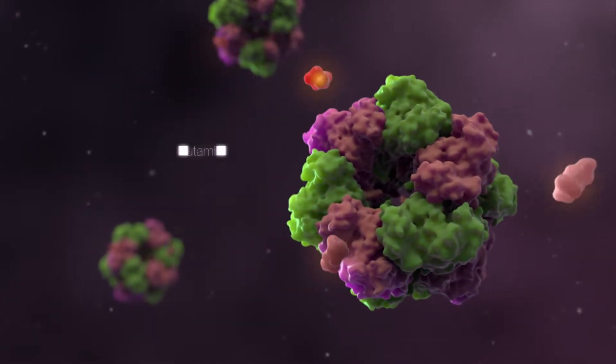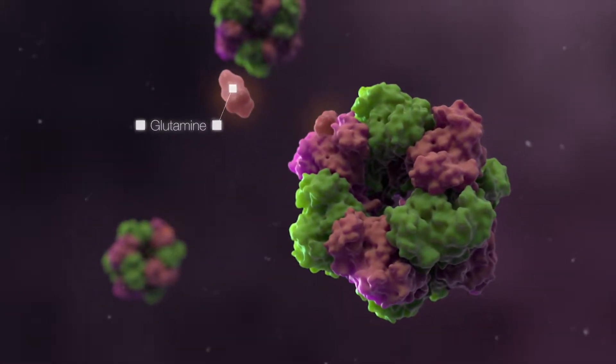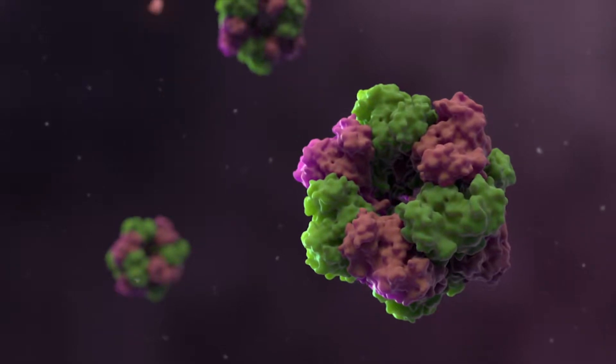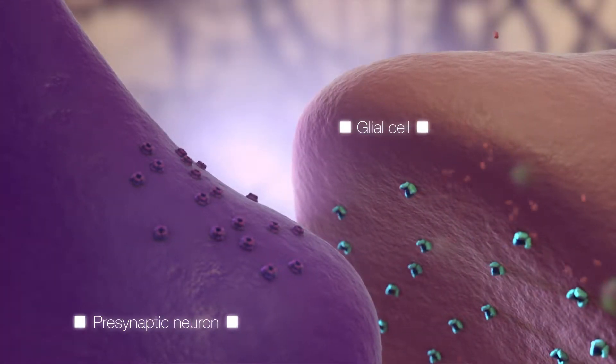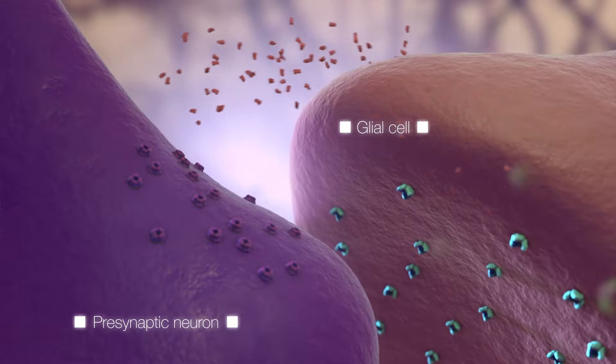Once glutamate is inside the glial cell, it is converted to glutamine, which no longer possesses excitatory properties. Glutamine is then shuttled back into the presynaptic neuron to be recycled into glutamate.